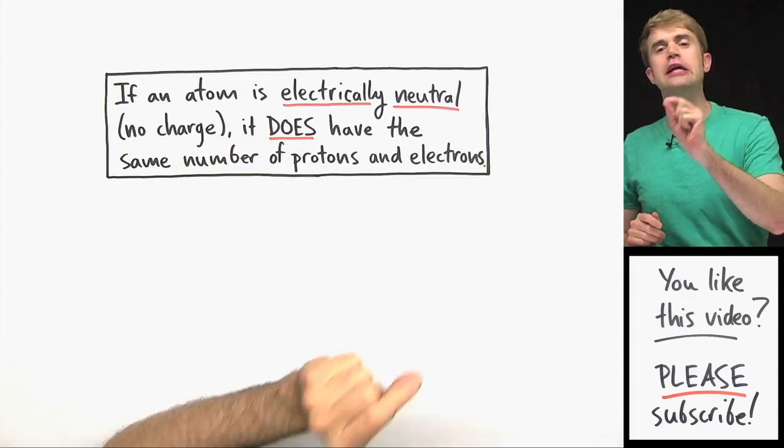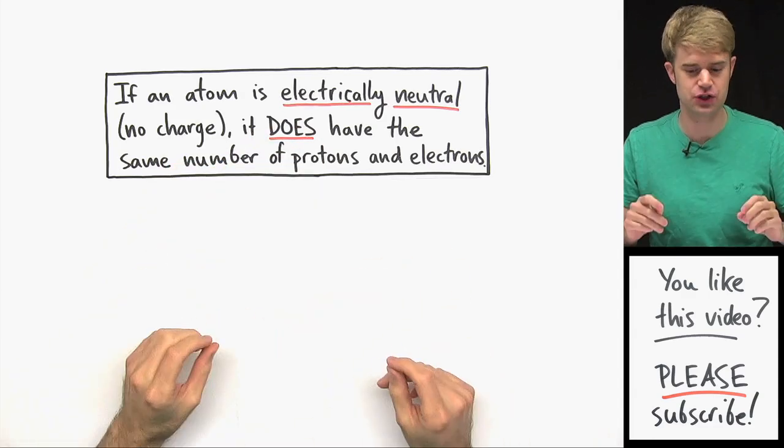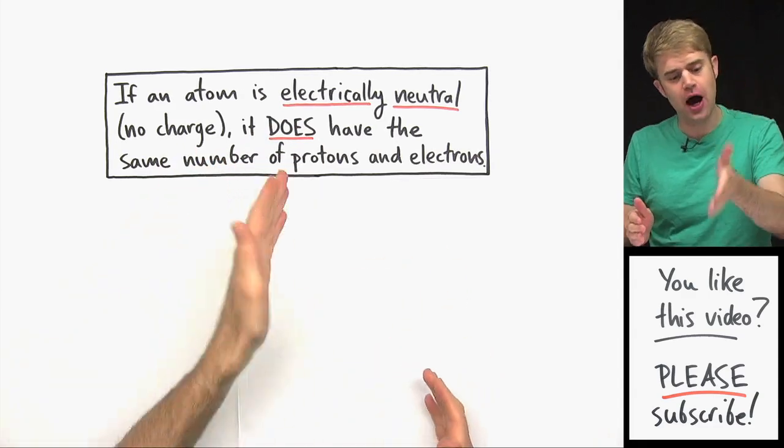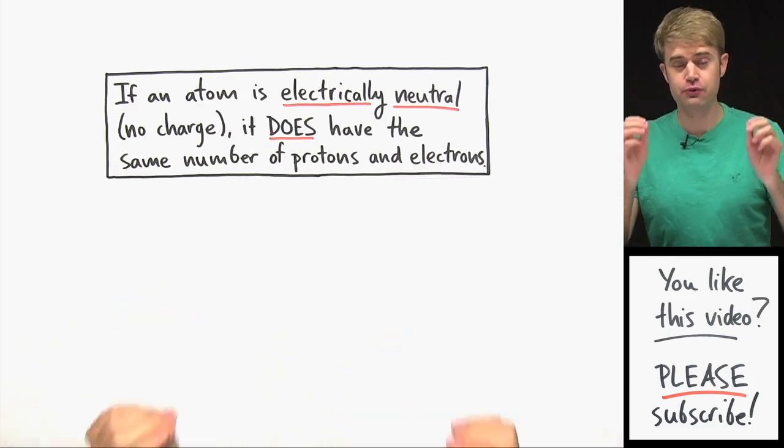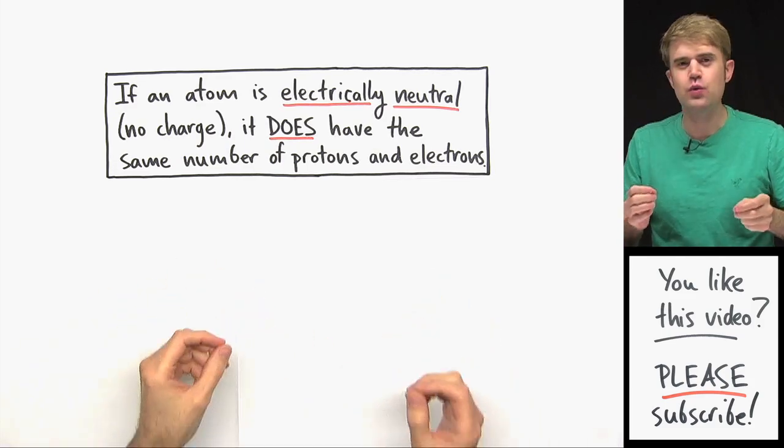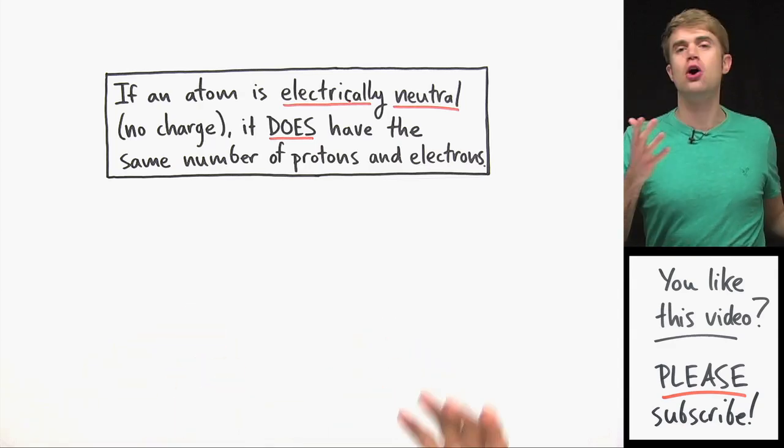If an atom is electrically neutral, which means it doesn't have a charge, that atom does have the same number of protons and electrons. And a lot of times, we assume that atoms are neutral.